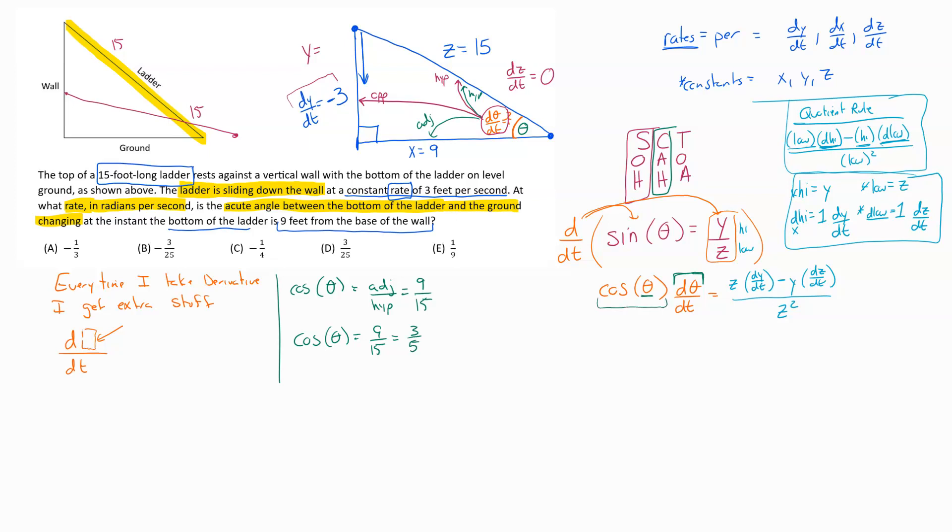So now I'm going to plug in that value right here. So the cosine of theta is 3 over 5, and then d theta dt is what we're trying to find, and now we come through and start working with the rest of this. So z here, that I was given, that's 15, then dy dt, that was given to us as well, that's negative 3, minus...